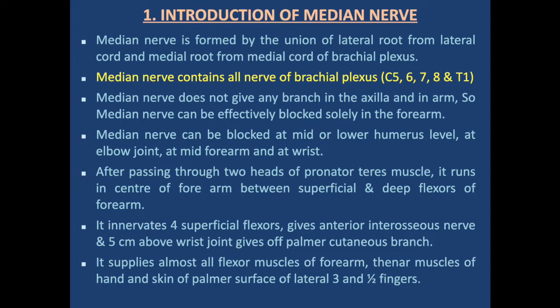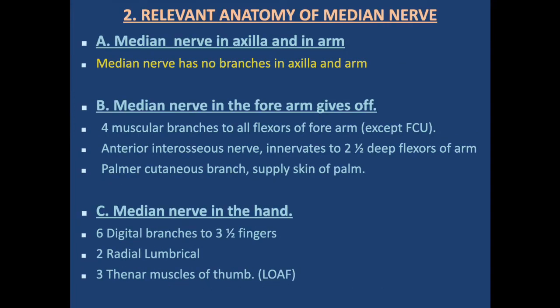The median nerve supplies almost all flexor muscles of the forearm, the thenar muscles of the hand, and the skin of the palmar surface of the lateral three and a half fingers. From an anatomical point of view regarding the block, the median nerve can be described in three regions: in the axilla and arm, in the forearm, and in the hand.